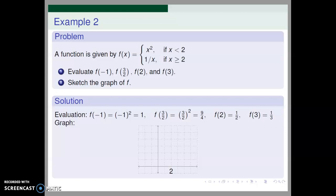For inputs less than or to the left of 2, we use the squaring function. So we graph the parabola y = x² for x strictly less than 2. Note that the squaring function is not used at the input x equal to 2.